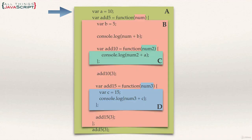Here's a diagram identifying the scope created by that code. The outermost scope is labeled A. The `add5` function creates scope labeled B. Inside `add5`, the `add10` function creates scope C, and `add15` creates scope D. Notice that in the scope for B, C, and D, the function definition itself does not belong to its own scope — it resides in the outer scope. For example, `num2` is part of scope C, but the `add10` function is part of scope B.